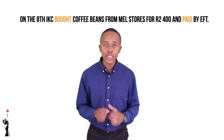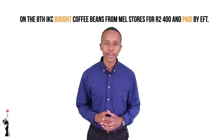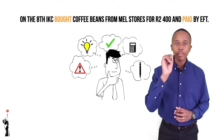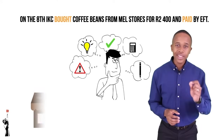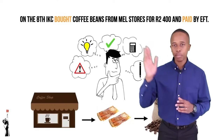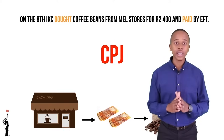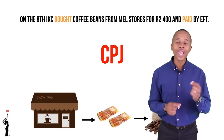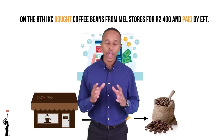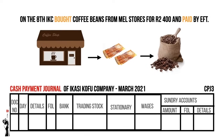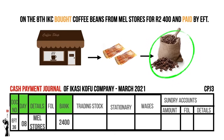On the 8th, IKC bought coffee beans from Mail Stores for 2,400 Rand paid via EFT. Money is leaving the business, so this is recorded on the CPJ. The method of payment is EFT. By this point you should be able to record the document, day, details, and bank column. Coffee beans are IKC's trading stock, as Kamva needs them to make coffee for his clients. Therefore, the 2,400 Rand should also be recorded in the trading stock column.